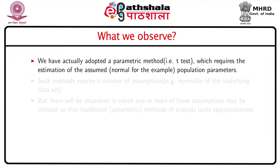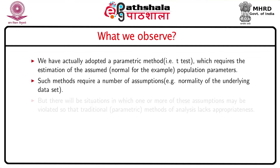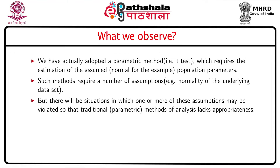In the previous problem, we adopted a parametric method — the Student t-test — which requires estimation of the assumed population parameters. For the t-test, we assume normality, and such methods naturally require a number of assumptions, for example normality of the underlying data set. But there are situations in which one or more of these assumptions may be violated, so that traditional parametric methods of analysis lack appropriateness.